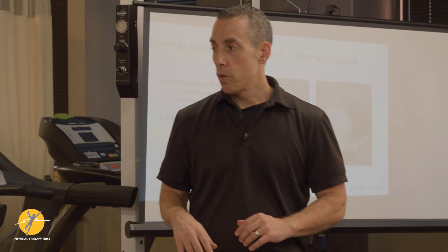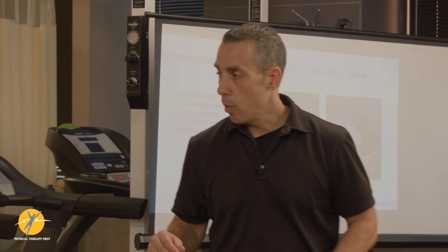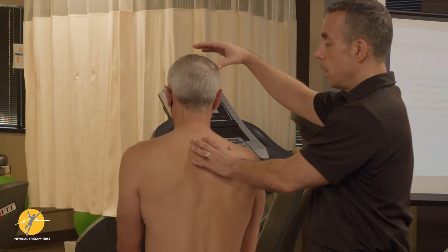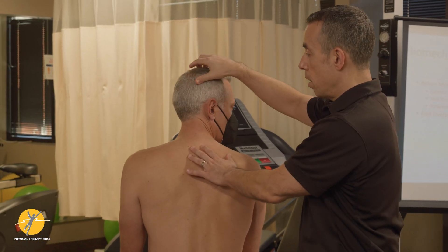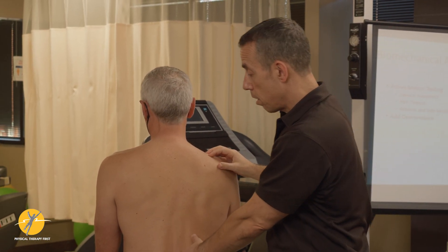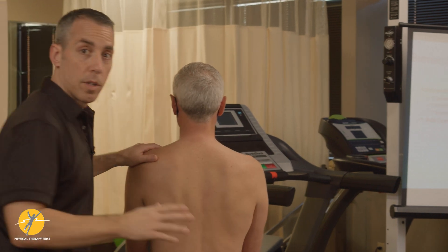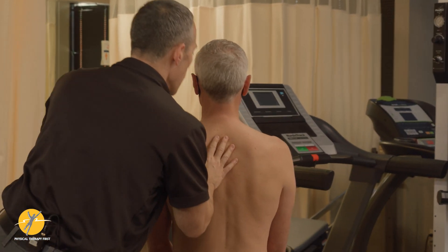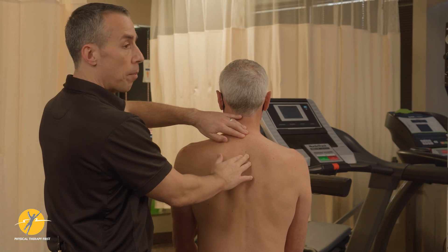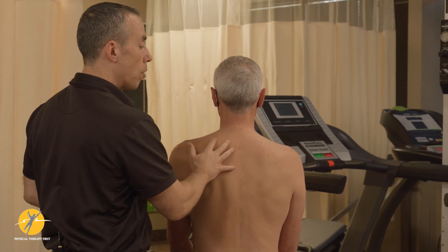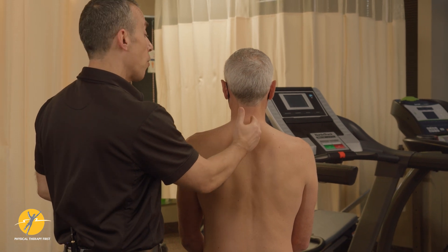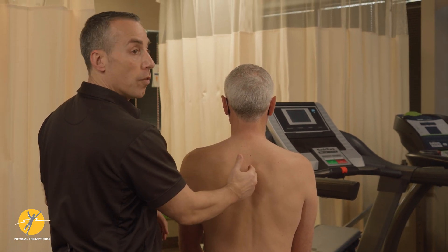When looking at active range of motion, we want to make sure that we cover the active range of motion of what's going on in the upper part of the thoracic spine, the middle thoracic spine, and the lower thoracic spine. If we want to assess the active range of motion for the upper thoracic, we know there are referral patterns that can come from the cervical spine, and we also know that the thoracic spine itself can move based on that.